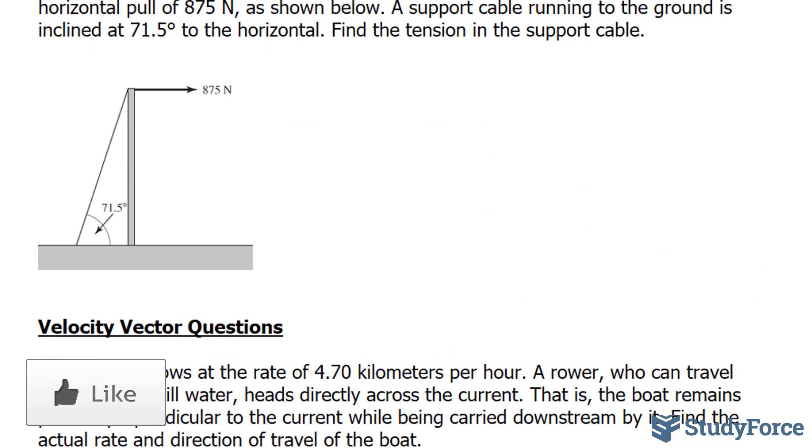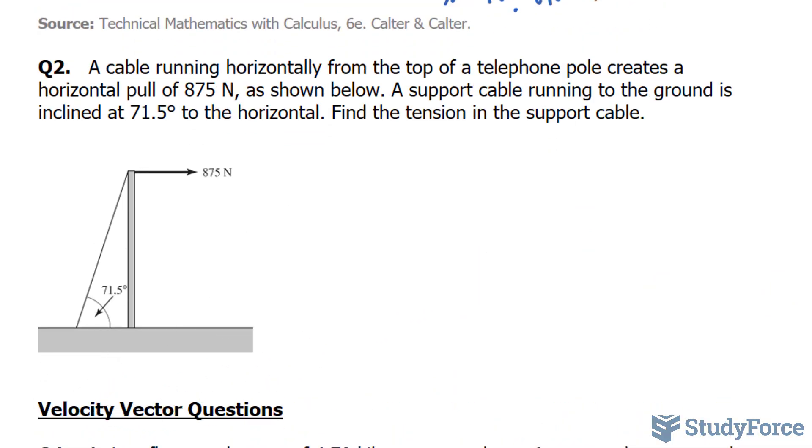In question number two, a cable running horizontally from the top of a telephone pole creates a horizontal pull of 875 Newtons as shown. A support cable running to the ground is inclined at 71.5 degrees to the horizontal. Find the tension in the support cable.